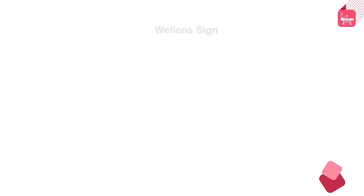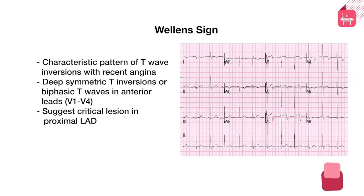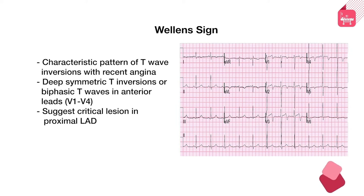Another high-yield finding is the Wellens sign, first described by the Dutch electrophysiologist Heijn Wellens. This is a characteristic pattern of T wave inversions — biphasic or symmetric — from V1 to V4 in a person complaining of recent angina. This pattern often suggests a critical lesion in the proximal LAD artery and requires urgent care or intervention.